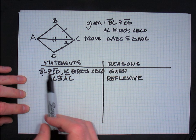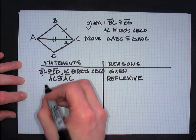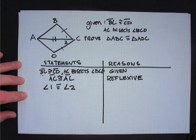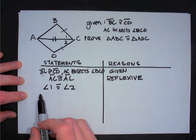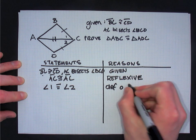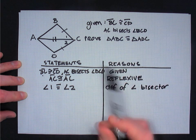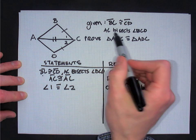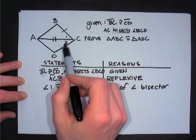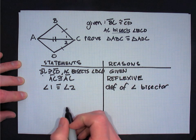We need a third pair of congruent parts. I know that angle one is congruent to angle two — how? Because of the definition of angle bisector. We're given that AC bisects angle BCD, and when we see the word bisect, we know it cuts something in half. It's cutting angle BCD in half, creating two congruent angles. So because of the definition of angle bisector, angles one and two are congruent to each other.